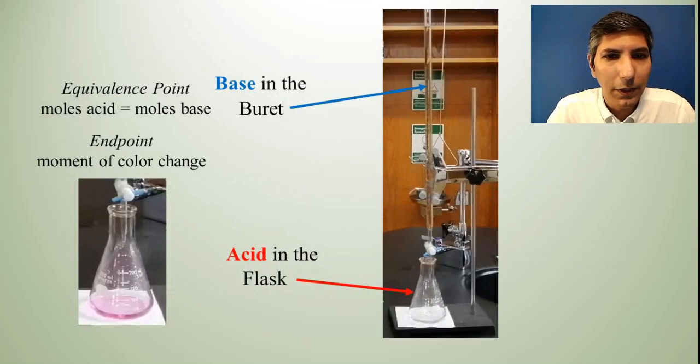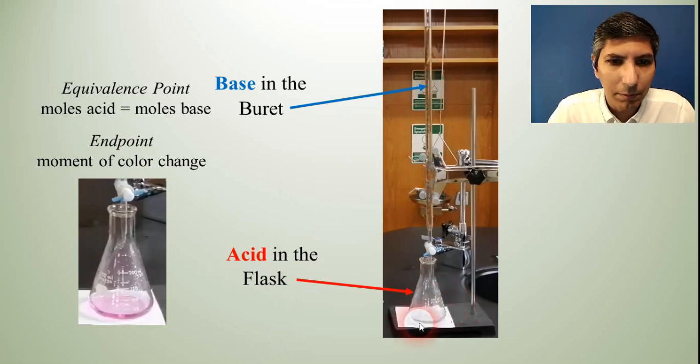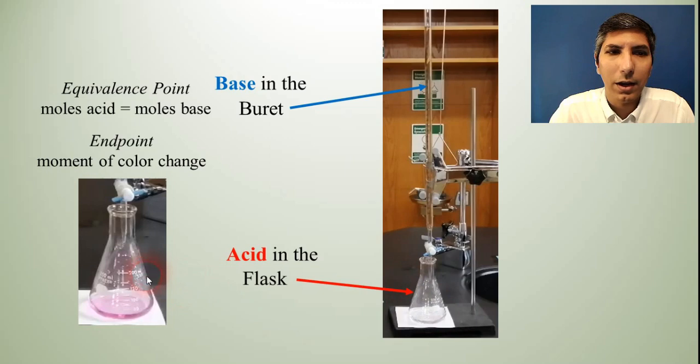So this is what that looks like. Here is your burette up top, and here's your Erlenmeyer flask. And like I said, you'll probably put a few drops of acid-base indicator into the flask as well. That way you know that when the color changes, the reaction is done.